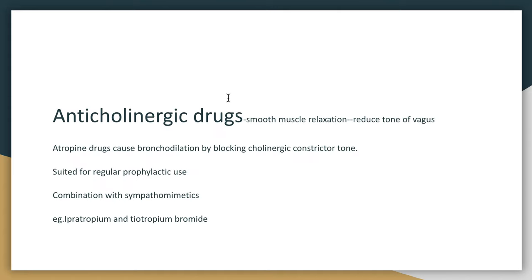Coming to anticholinergic drugs. Anticholinergic drugs cause smooth muscle relaxation and reduction in the tone of the vagus. Atropine-like drugs cause bronchodilation by blocking cholinergic constrictor tone. So anticholinergic drugs are basically bronchodilators — they relax the smooth muscles of the bronchioles. They are suited for regular prophylactic use in combination with sympathomimetics. Examples include ipratropium and tiotropium bromide.